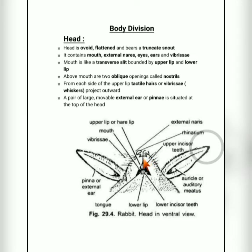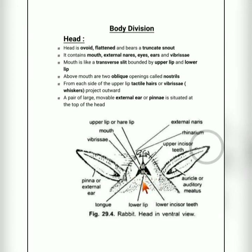The head consists of: mouth, external nares — that is external nostrils, written N-A-R-E-S — a pair of eyes, ears, and vibrissae. Vibrissae are the whisker-like structures. The mouth is actually a transverse slit or a small opening, and it has an upper lip and lower lip.